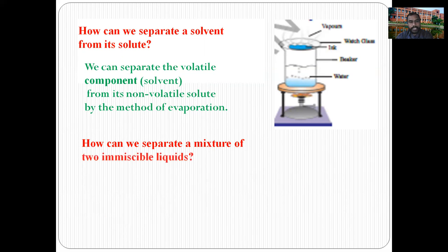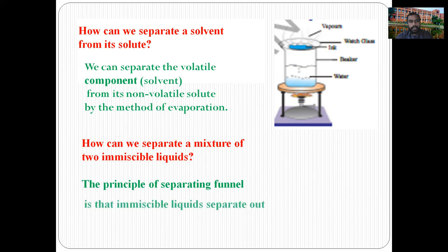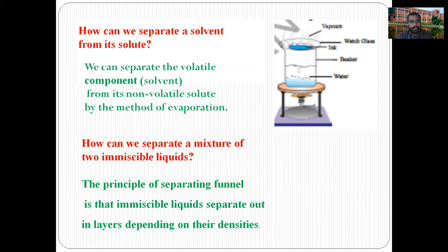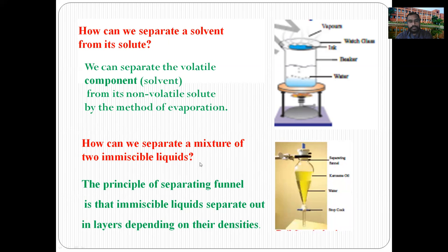How can we separate a mixture of two immiscible liquids? By using the principle of a separating funnel, the immiscible liquids separate out. They form different layers based on their relative densities. The principle is that immiscible liquids separate out in layers depending on their densities, and separation is easily achieved using a separating funnel.